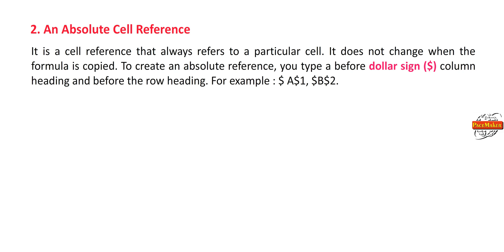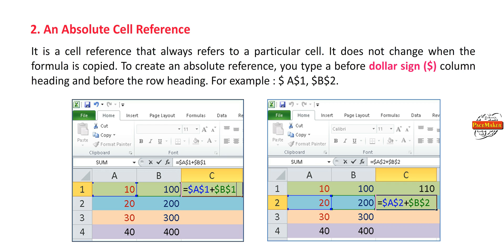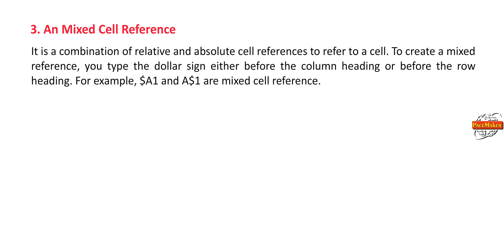To create an absolute cell reference, you type a dollar sign before the column heading and before the row heading. For example, $A$1 or $B$2. Third, a mixed cell reference is a combination of relative and absolute cell references. To create a mixed reference, you type the dollar sign either before the column heading or before the row heading. For example, $A1 and A$1 are mixed cell references.